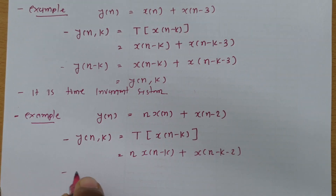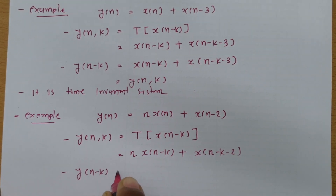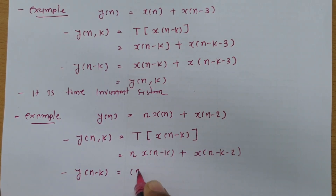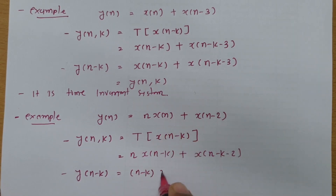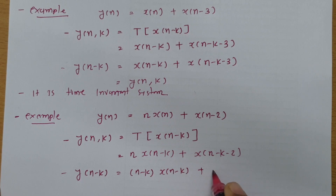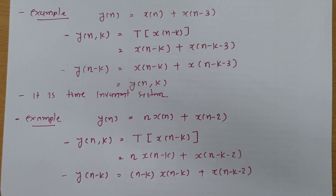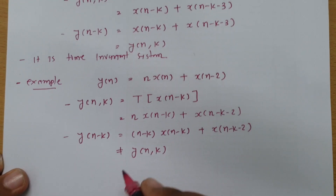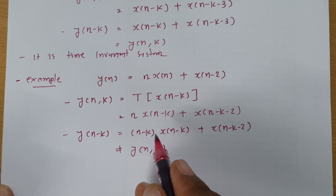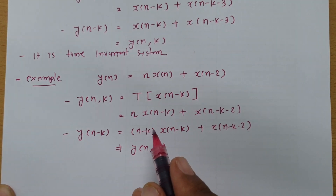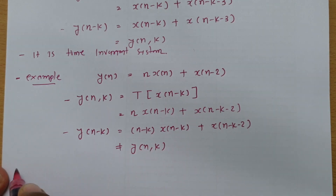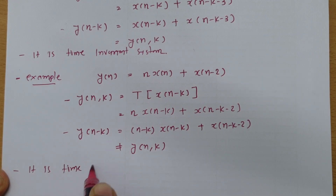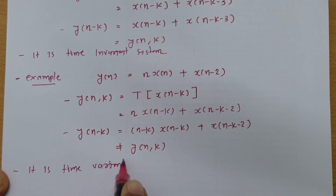Now when you calculate y(n minus k), you replace all n with n minus k. So the n coefficient becomes n minus k, giving (n minus k) times x(n minus k) plus x(n minus k minus 2). This is not equal to y(n, k). So we can say the characteristic of the system is changing with respect to time, and therefore it is a time variant system.